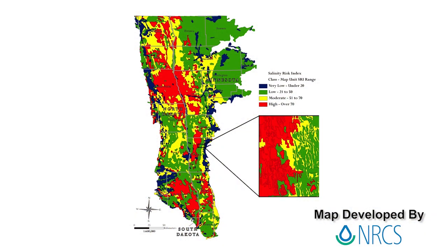You can see in this salinity risk index map that was developed for the Red River Valley by the NRCS soil survey that red areas indicate a high risk. This is a major problem producers are facing not only in the valley, but across the entire state.